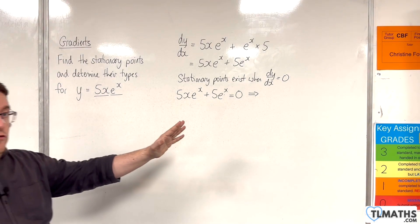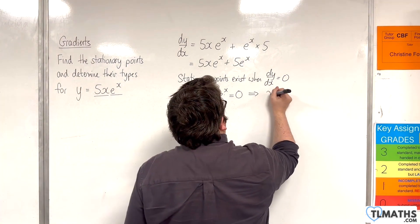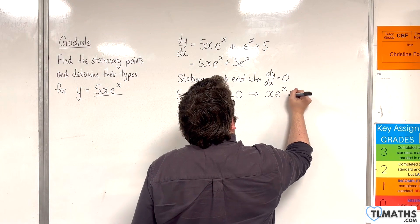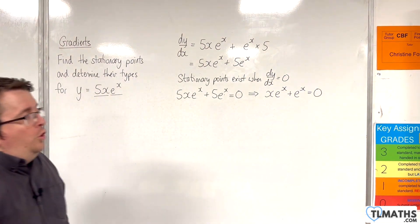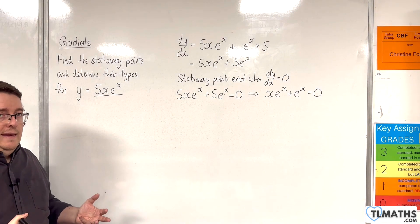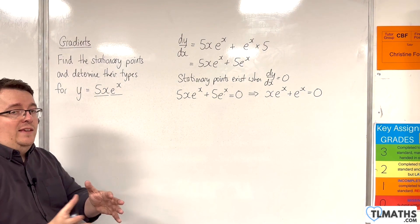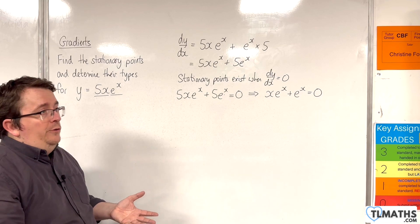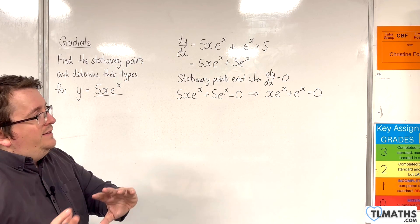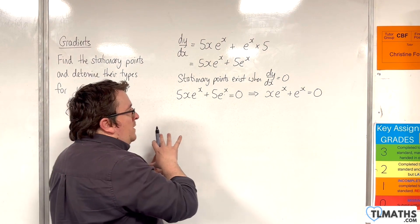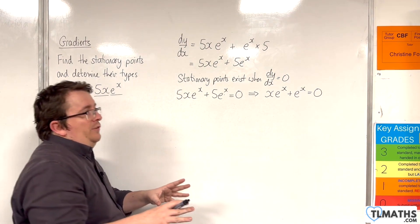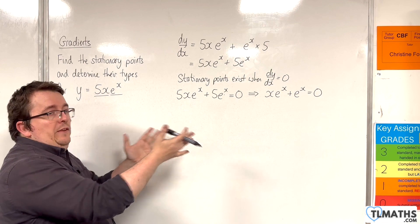We can divide through by 5 to start off with, so we have x e to the x plus e to the x equals 0. You could divide through by e to the x in this case because e to the x cannot be 0, so you won't lose any solutions. I don't always like doing that in general because of the possibility of losing solutions, even though I know I won't in this example.